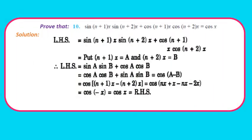Question 10: Prove sin(n+1)x·sin(n+2)x + cos(n+1)x·cos(n+2)x = cosx. Looking at the LHS, this matches the form of cos(A−B) = cosA cosB + sinA sinB. Setting A = (n+1)x and B = (n+2)x, LHS = cos((n+1)x − (n+2)x) = cos(−x). Since cos(−θ) = cosθ, this equals cosx, which is our RHS. Hence proved. Pause and note down the solution.